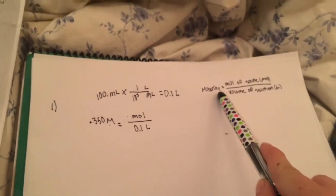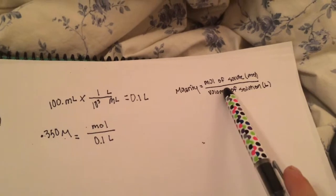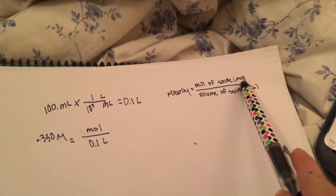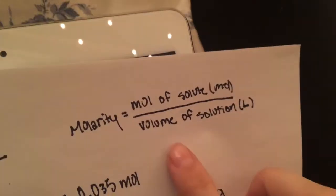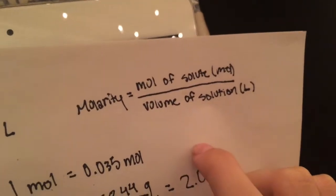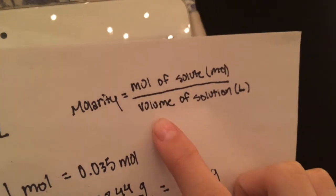The formula we're going to use is molarity equals mol of solute, which is in moles, over volume of solution, which is in liters. We are using this formula because we are using a solid solute, NaCl, which is salt.